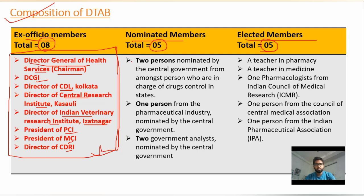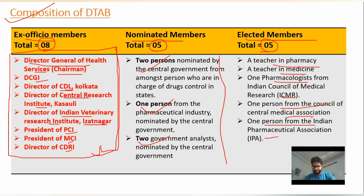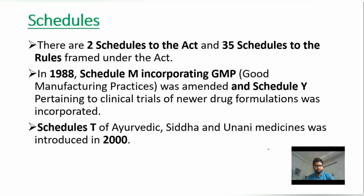The nominated members include two from the central government, one from the pharmaceutical industry, and two government analysts. The elected members include one teacher from a pharmacy background, one teacher from a medicine background, one pharmacologist from ICMR, one person from IPA, and one person from the Central Medical Association.